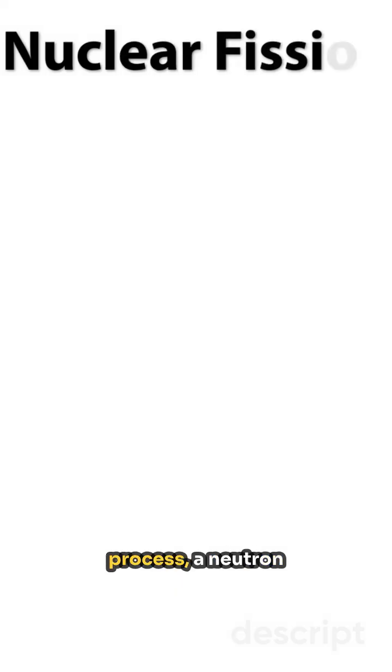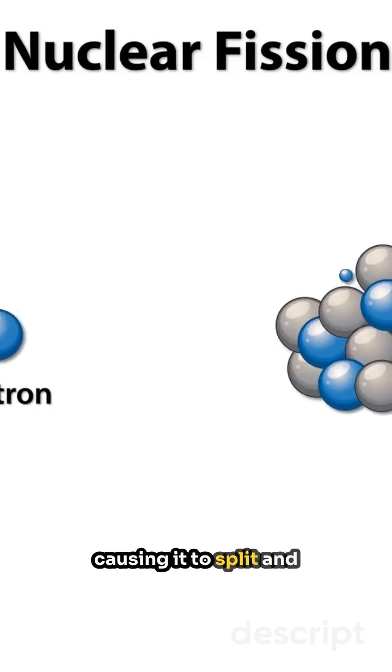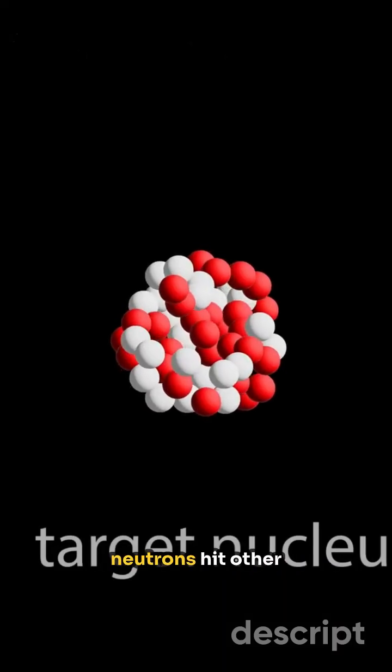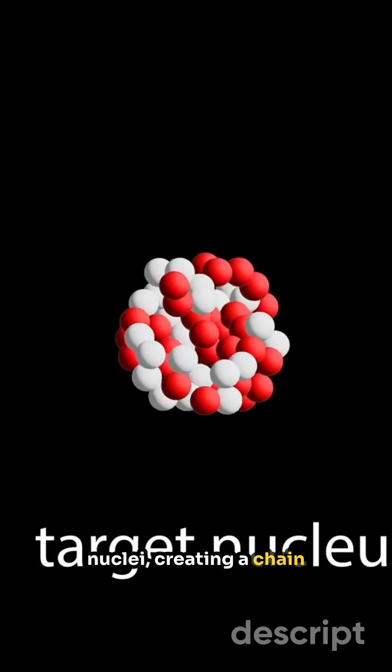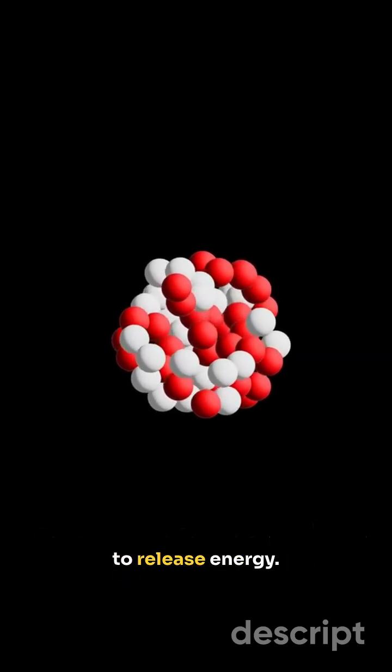To start the fission process, a neutron collides with a nucleus, causing it to split and release more neutrons. These released neutrons hit other nuclei, creating a chain reaction that continues to release energy.